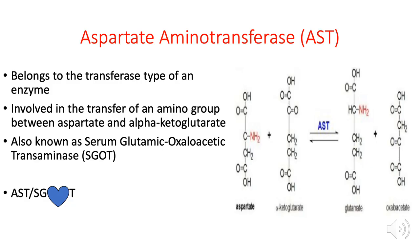The third enzyme is aspartate aminotransferase (AST). Aspartate is the substrate, and the enzyme transfers an amino group from aspartate to another substrate. In the reaction, aspartate reacts with alpha-ketoglutarate; the amino group of aspartate is transferred to alpha-ketoglutarate, converting it to glutamate, while aspartate is converted to oxaloacetate. Since there is a transfer of a functional group, AST is a transferase enzyme, with the first digit in its enzyme nomenclature being number 2.